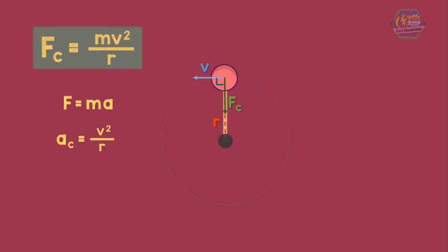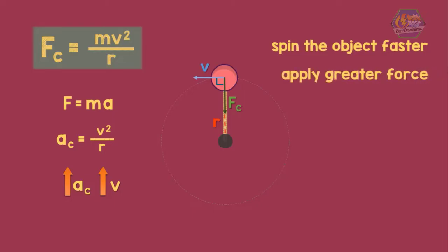This means that if we want to increase the centripetal acceleration, we need to increase the velocity. So if you spin the object faster around your head, you're going to have to apply a greater force.